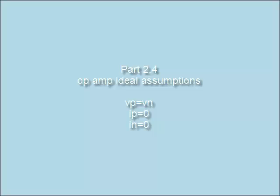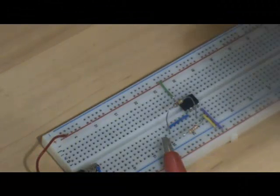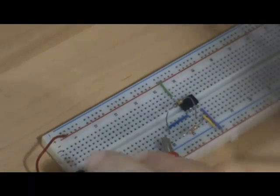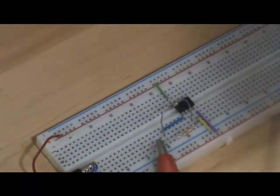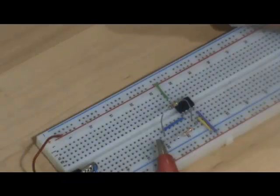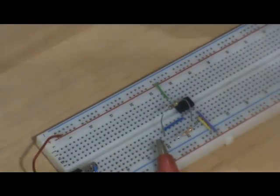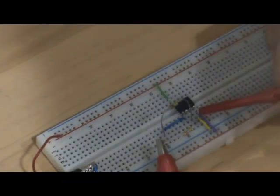In part 2.4, measure the node voltage at the two inputs and compare your measurements to the ideal assumptions used in analyzing op-amp circuits. Ideally, we assume VP and VN to be the same node voltage, but it may be different from zero. Compare your results to the manufacturer's specification.